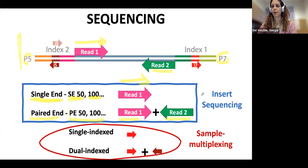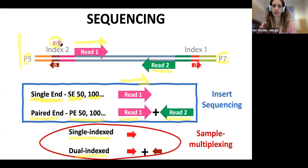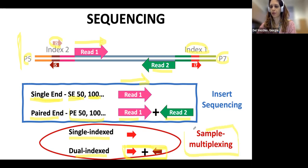The sequencing core will also ask about barcoding: single index or dual index. Single index means only one index is used. Dual index means two different indices are used during library prep, and they can be a unique combination or both individually unique. This is important for sample multiplexing. Any combination is possible: single-end single index, single-end dual index, paired-end single index, or paired-end dual index.